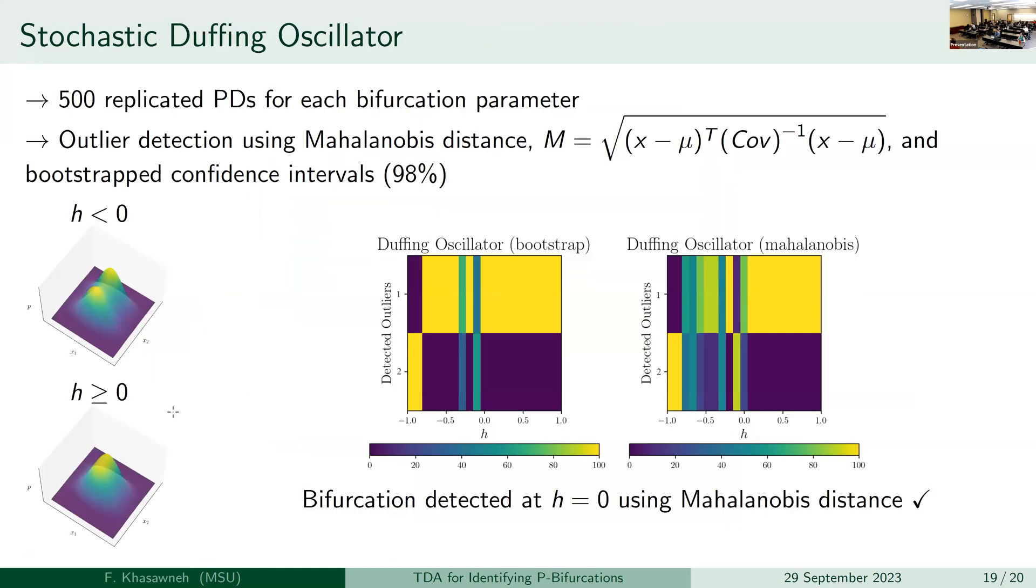So here I have an example, where we replicated 500 persistence diagrams for each bifurcation parameter for the stochastic Duffing. And then we used, so here we were experimenting with outlier detection methods. So we tried the Mahalanobis distance, for example, and the bootstrapped confidence intervals with 98% confidence level. And just to remind you, this is the system where I go from two peaks to one peak. And what you see here are the results. So again, you see here the number of outliers on the y-axis, the bifurcation parameter H. And if you remember, the bifurcation occurs at H equal to zero. And then the color tells me the probability. And so based on this study, it would seem at least for this example, that the Mahalanobis distance captures the bifurcation a bit better than the bootstrap. And you can see that because I have with higher probability that I have two peaks for values of H larger than zero. And that probability of the second peak coming in starts increasing.